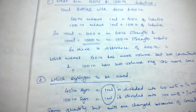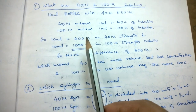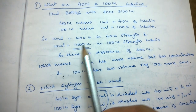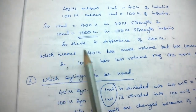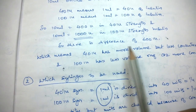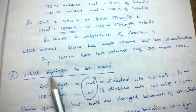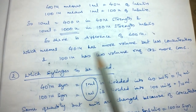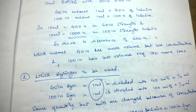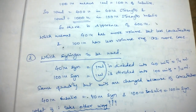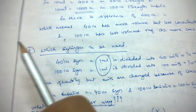The composition of insulin will be the same, but the overall units are changing. When you take 40 international units it has more volume but less concentration, and when you take 100 international units it has less volume and more concentration. I'll explain this part further, but first we will see which insulin syringes are to be used.